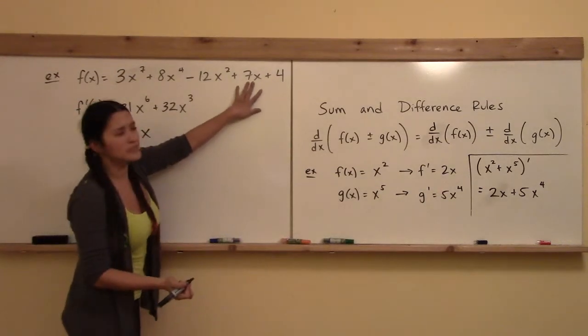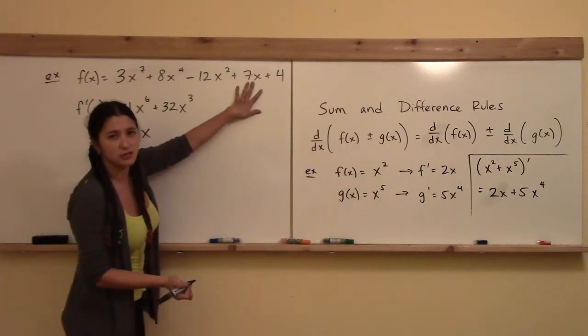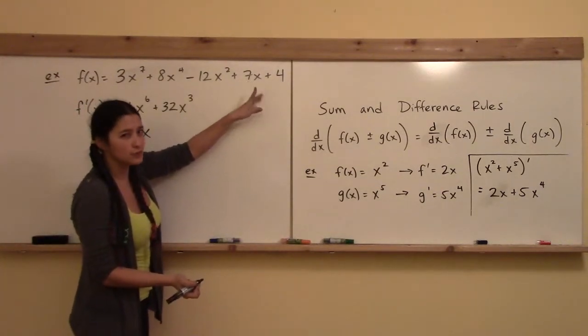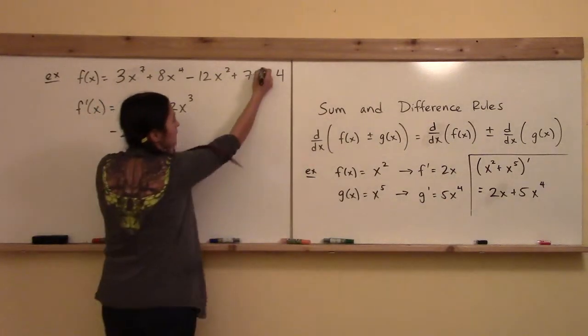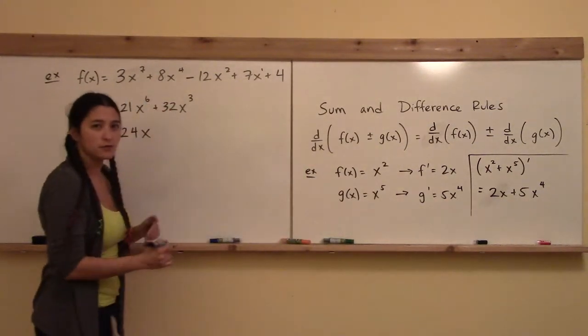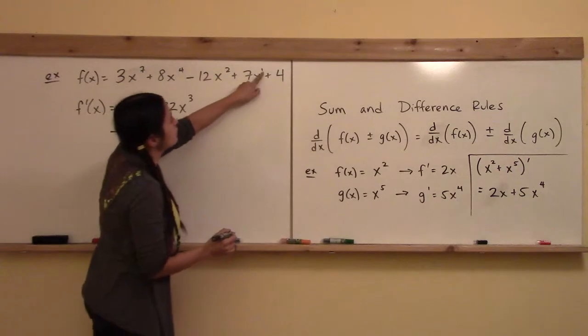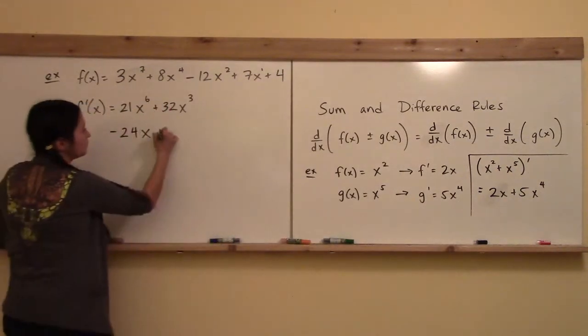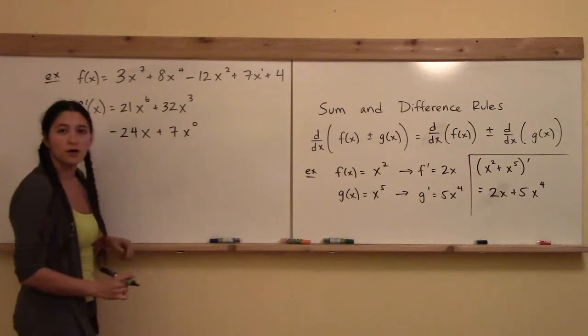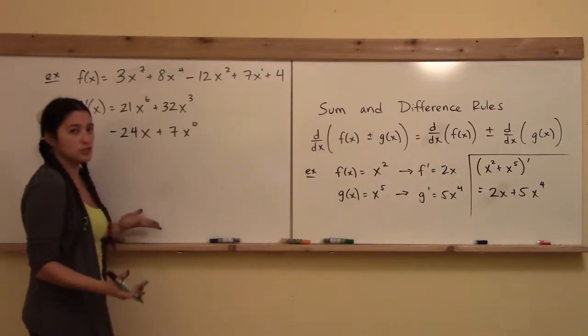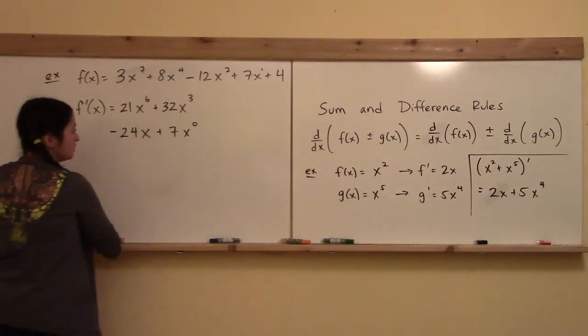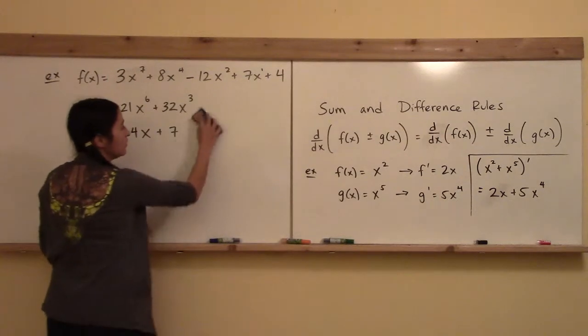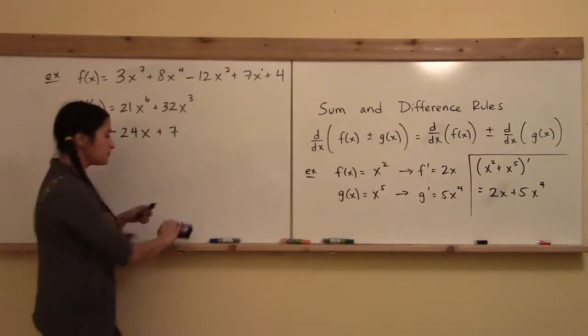Now what about when we get to the 7x? What power is this x to? That's right, it's x¹. There's a secret x¹ here, and the power rule is still in effect. I take the 1, carry it down, 7 times 1 is 7, and then I have x⁰. But x⁰, just like everything else to the 0, is just 1. So I can just write plus 7.